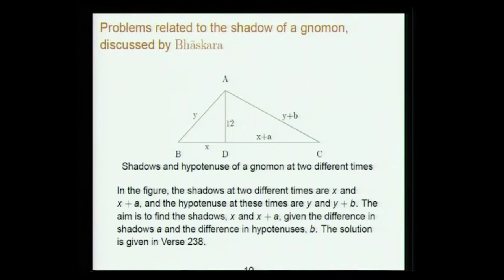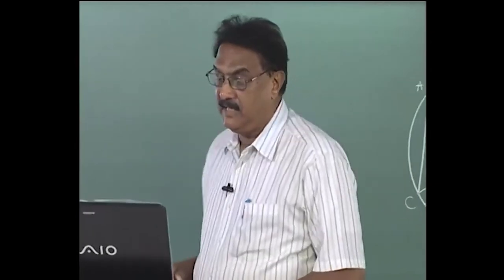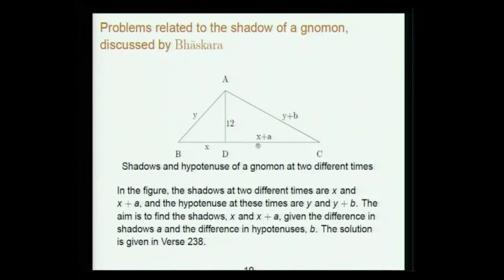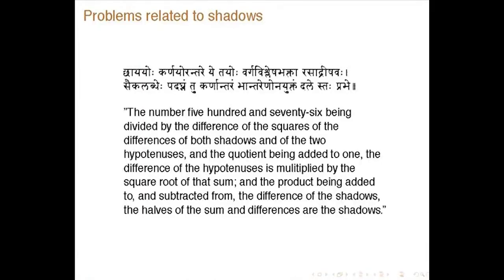The shadow of a gnomon — earlier works invariably discuss shadow problems. Here Bhaskara gives a more advanced problem: there is a gnomon (Shanku) whose height is 12. Its shadow is x at one time and x + a at another time. The hypotenuse (Karna) is y when the shadow is x and y + b when the shadow is x + a. Given only a and b — the differences — you must find the shadow and the hypotenuse.